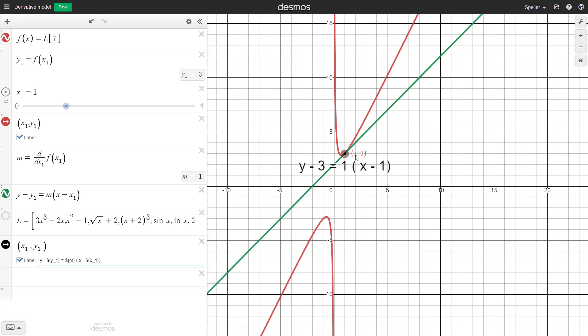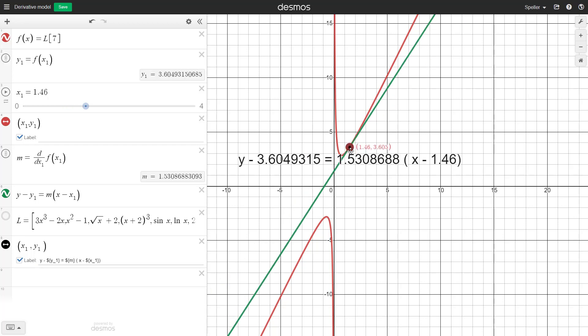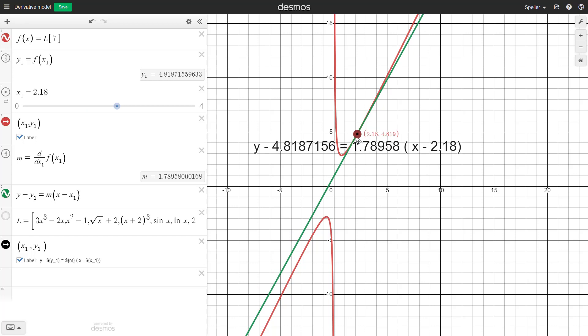Now we have a dynamic model where I can drag the point. Let's drag it to 2. When the X value is 2, the equation for the tangent line is Y minus 4.5 equals 1.75 times the quantity X minus 2.